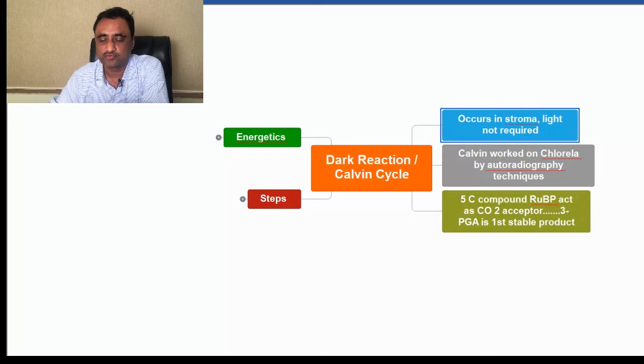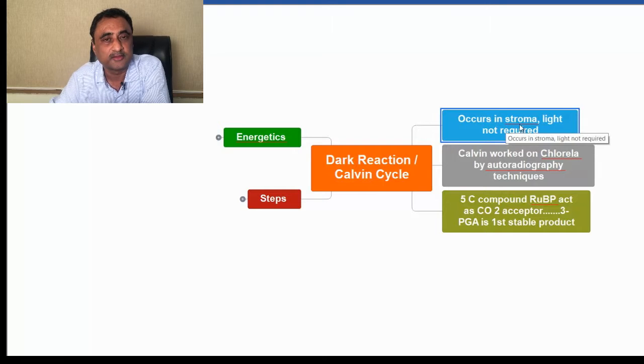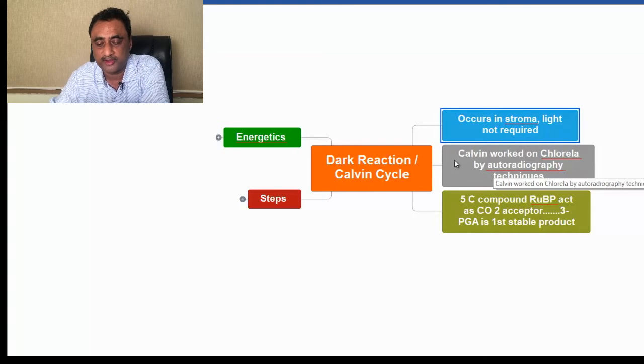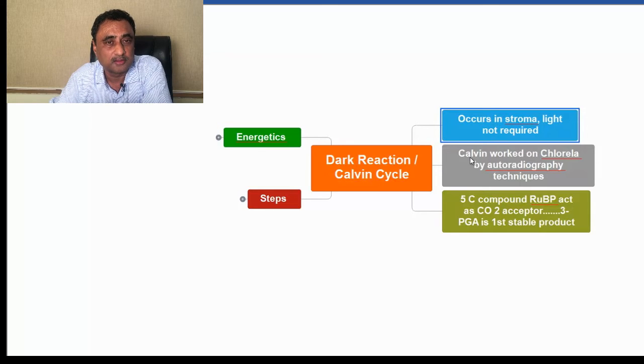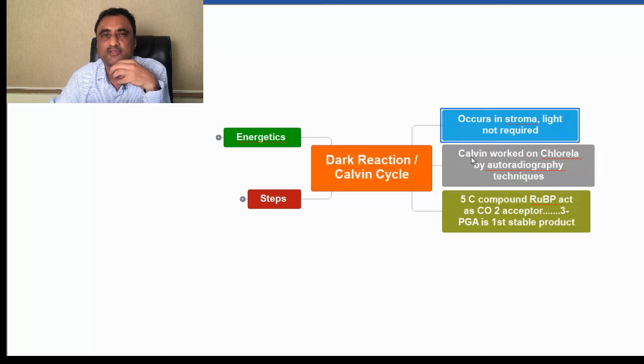First of all, this occurs in the stroma and light is not at all required. The Calvin cycle was worked out by Calvin on chlorella, a green alga, using the technique of autoradiography. Chlorella was fed with radioactive material and after a certain period, the products formed were analyzed to construct the entire Calvin cycle.